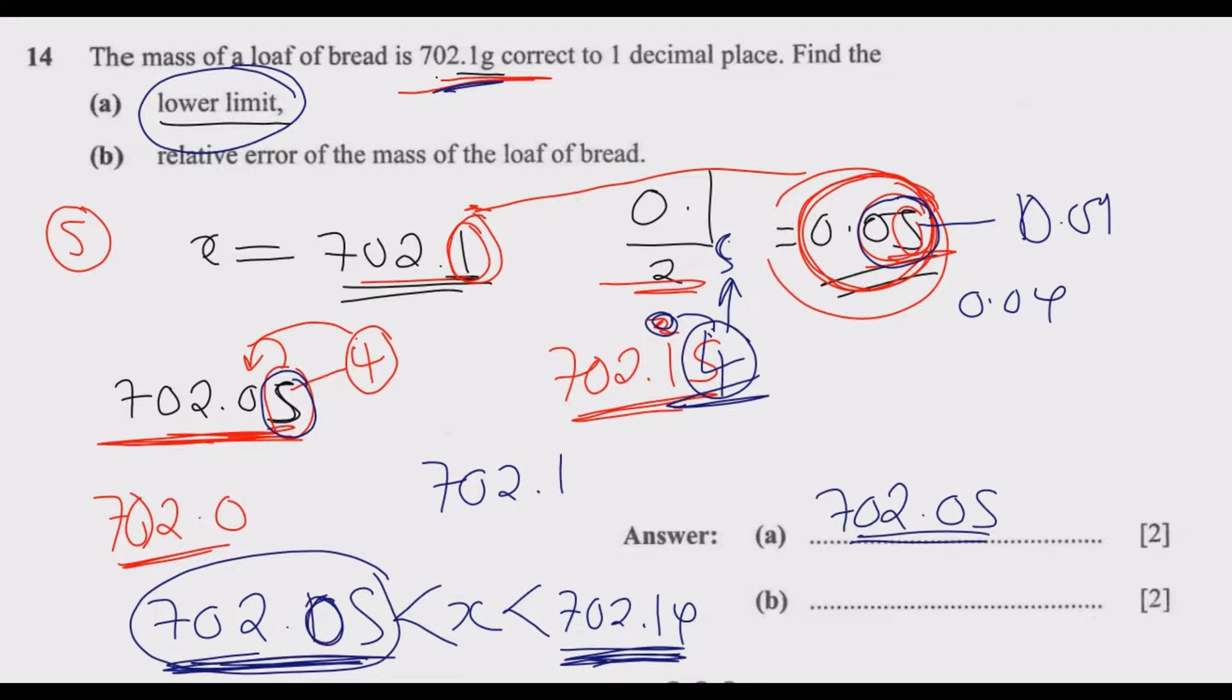If the question was asking for the upper limit, you would use 702.14. Ideally, the question is asking what is the interval to two decimal places where x should lie, such that when corrected to one decimal place, it gives 702.1. This is how you answer question A.